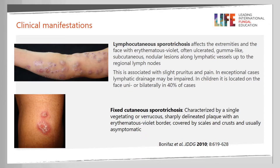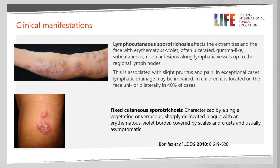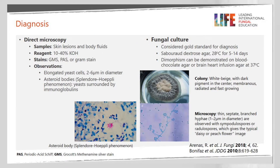Here you can see a classical lymphocutaneous sporotrichosis affecting the upper extremities and upper limbs. The classical lesion is a nodule or gumma-like lesion, sometimes ulcerated, with a linear progressive lymphatic pattern. And this fixed cutaneous sporotrichosis is a single verrucous lesion — it is very difficult to recognize this type of sporotrichosis.